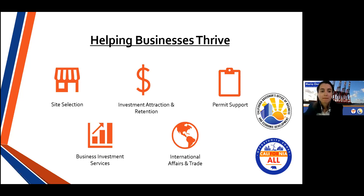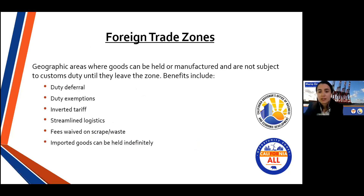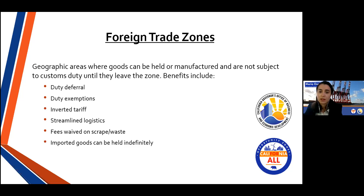Given the importance of manufacturing to California's economy and to foreign investors, I want to touch on foreign trade zones, or FTZs. Like opportunity zones, foreign trade zones are a federally administered, place-based incentive. Foreign trade zones are geographic areas where goods can be held or manufactured and are not subject to customs duty until they leave the zone — technically when they enter U.S. customs territory. There are 18 foreign trade zones in California, making us the number three state in the U.S. based on the number of FTZs. California FTZs support more than 40,000 jobs and $4 billion in exports.